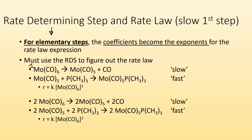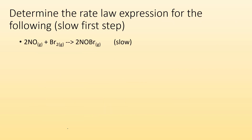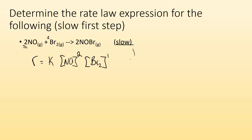In this example, the first step again is the slow one. The coefficient in front of that reactant is two, so it's going to be to the second power. So for elementary steps, coefficients become the exponent. Let's do a little practice — try to figure out what the rate law expression would be for this reaction. It's going to be: rate equals K times the concentration of NO squared, because there's a coefficient of two in front of it, times the concentration of Br2 to the first power, because there's a one there. This is the slow step, so I use it for my rate law as my rate determining step. This is my rate law expression for that elementary step.